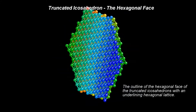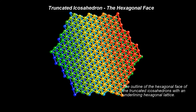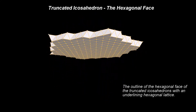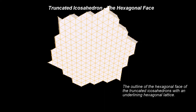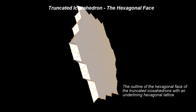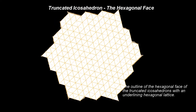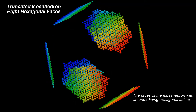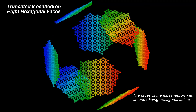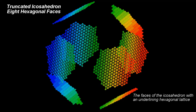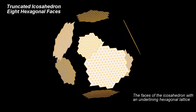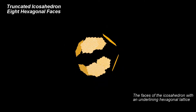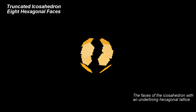Let's first consider only the faces of the Icosahedron with an underlining hexagonal lattice. As we have seen in a previous video, there are 8 such faces. Their locations and orientations in space are predetermined by two facts: 1. The faces belong to the initial Icosahedron, and 2. The size of the hexagons is determined by the overlap nodes.